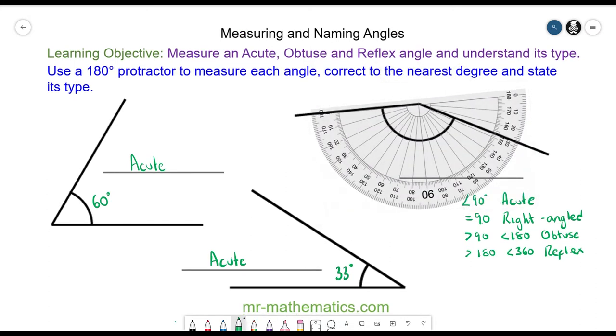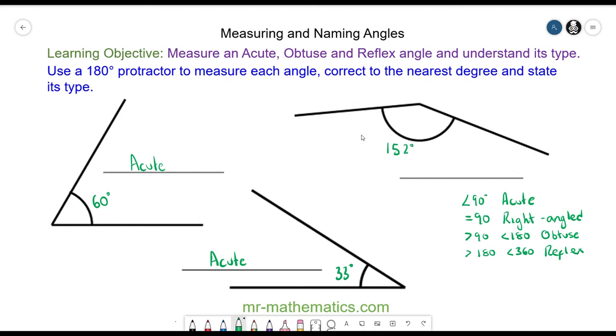So we have lined up with zero on this line, so we are going to use the bottom scale and we are going to go around in an anti-clockwise direction. So we will go to 10 to 40 to 70 to 100 to 130 to 140 to 150 to 151 to 152 degrees. And because this is greater than 90 but less than 180 it is an obtuse angle.